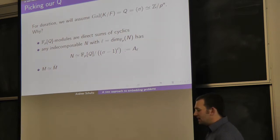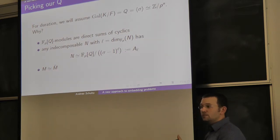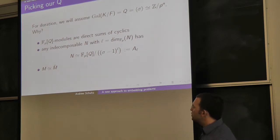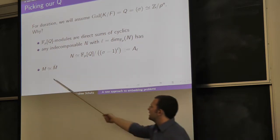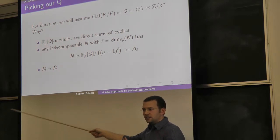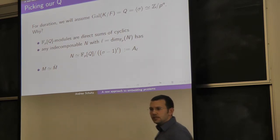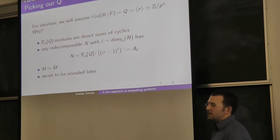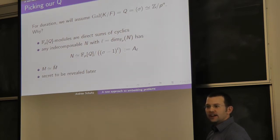The Galois group is an extension of Q by M-dual. Since M and M-dual are isomorphic, I can forget about that distinction when thinking about these as abstract FpQ modules. There's also some other reason it's nice to think about this particular value of Q that I'll tell you about later.